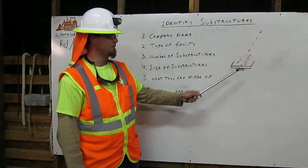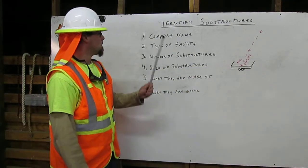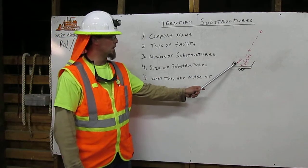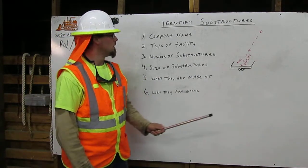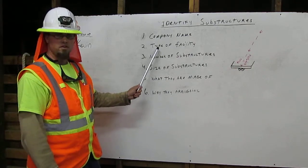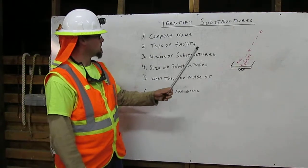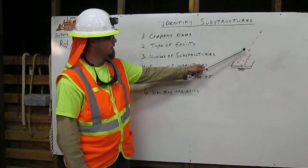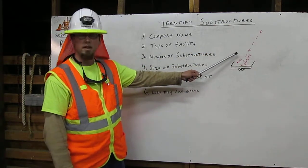Here we have an example. One, company name. Here we have ELCO. Two, type of facility. The facility is marked by red, which indicates electricity.